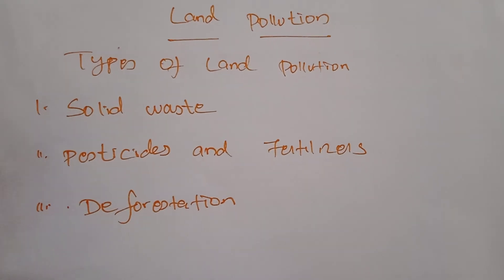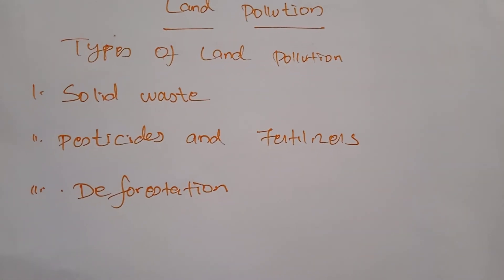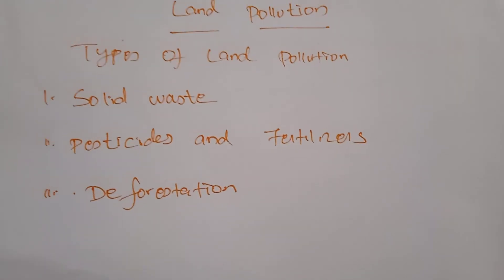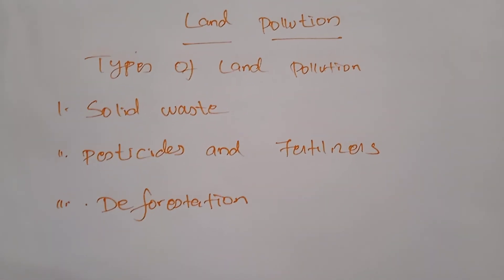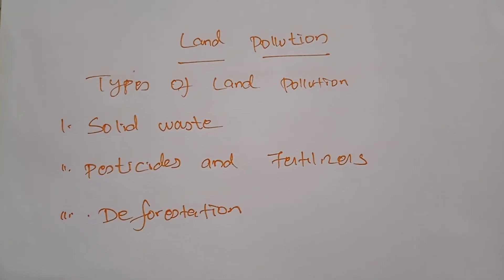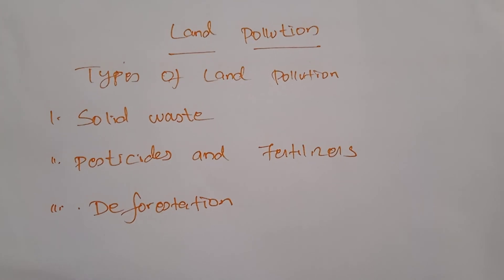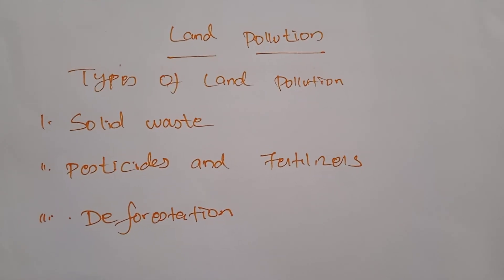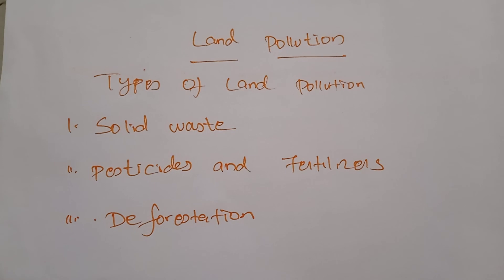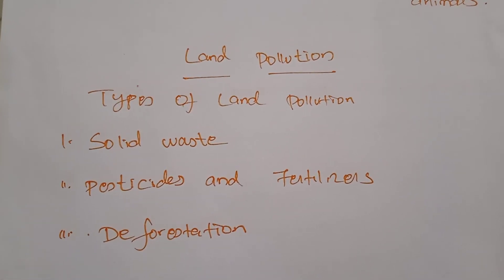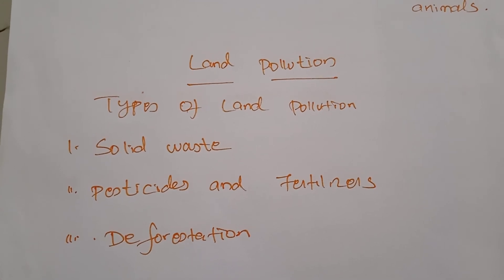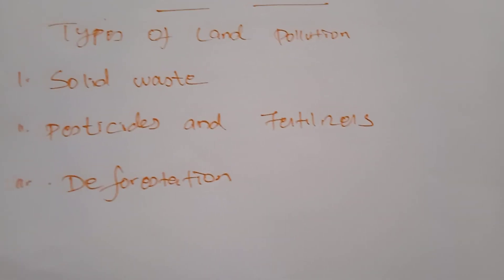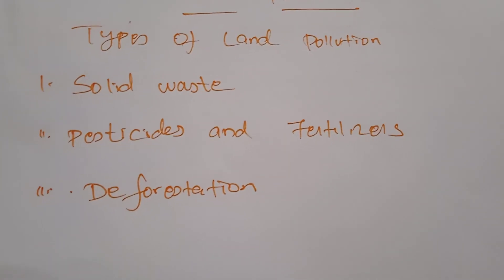Next, land pollution. Land pollution is defined as the degradation of land because of the disposal of waste on it. The types of land pollution include: first, solid waste — solid waste includes all kinds of rubbish like paper, plastic, containers, bottles, cans, food waste, broken electronic goods, municipal waste, and hospital waste. Because of all these types of solid waste, land gets polluted.